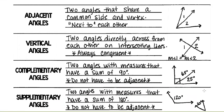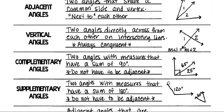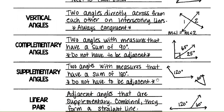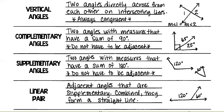Supplementary angles: two angles with measures that have a sum of 180 degrees — they do not have to be adjacent. So 120 degrees plus 60 degrees equals 180 degrees, making these angles supplementary.